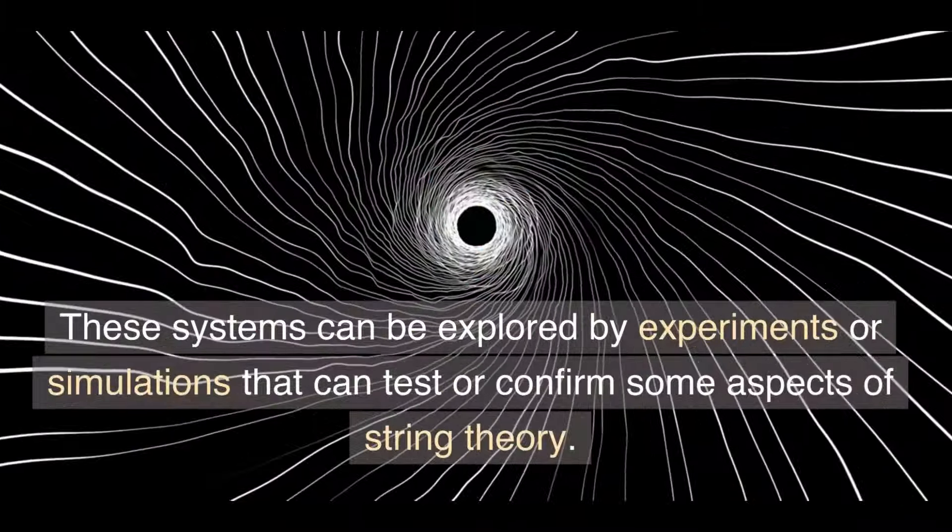Number 5: String theory is the ultimate theory of everything. This is often a misconception or an exaggeration that stems from the ambitious goals and scope of string theory, which aims to unify all the fundamental particles and forces in nature, including gravity. String theory is indeed a very powerful and elegant framework that can incorporate many features and phenomena that are otherwise difficult or impossible to explain by other theories.